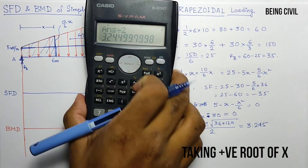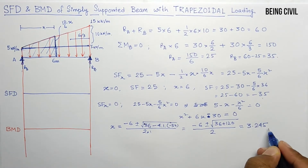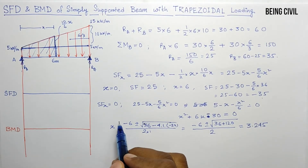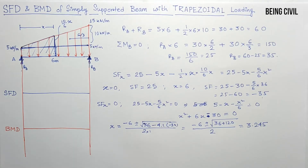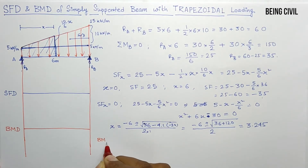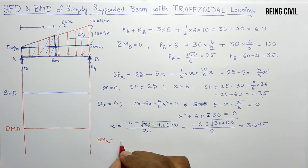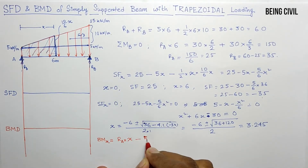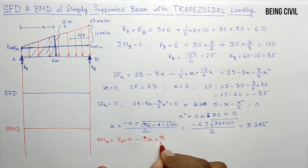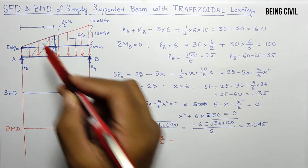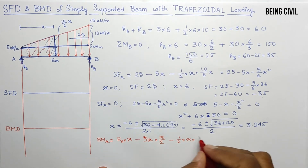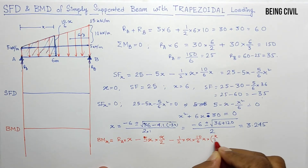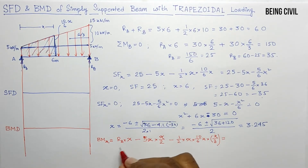This gives x = 3.245 m, just to the right of the midpoint, where the shear force is zero. Now let us find the bending moment equation. BM at distance x = Ra × x − 5x × (x/2) − ½ × x × (10/6)x × (x/3), which is a cubic equation in x.